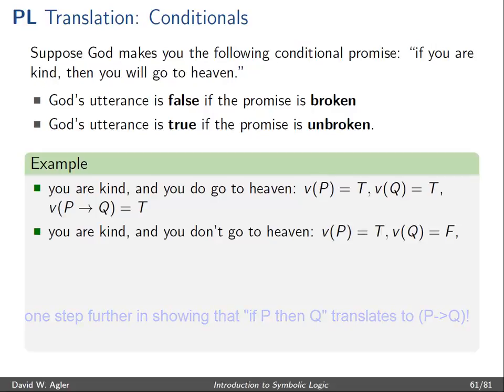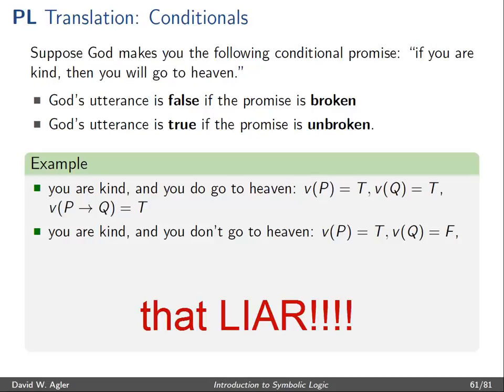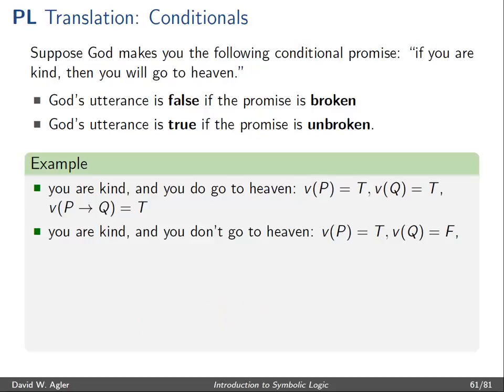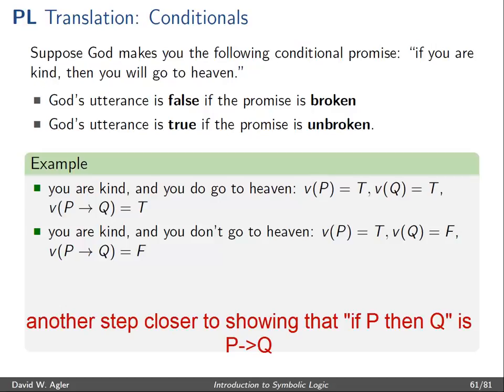How about: you are kind and you don't go to heaven? Here we would say that God's promise to us is broken. God promised us that we would go to heaven if we were kind, but we were kind and God sent us straight to hell. So God's promise is broken and his utterance is false. The same holds in symbolic logic: if P is true and Q is false, then the complex conditional is also false.